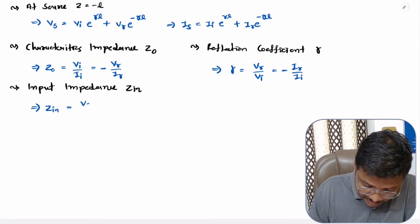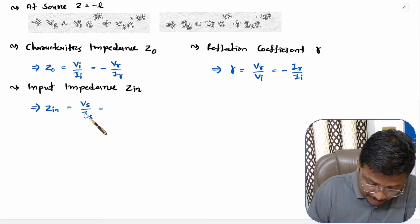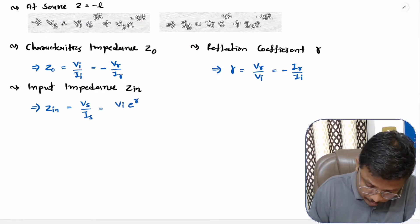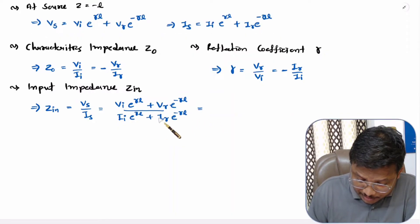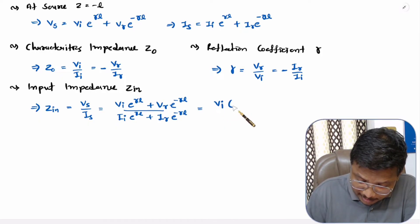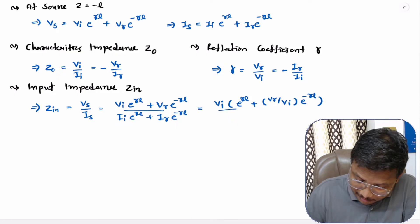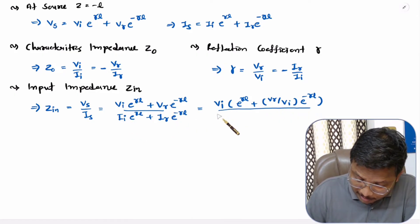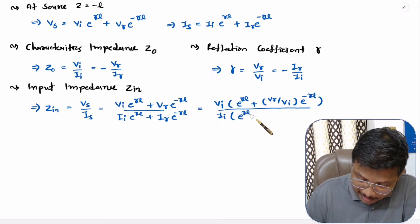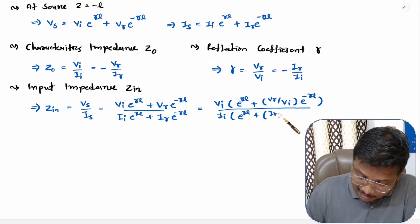So Zin equals VS divided by IS. Now we place VS and IS. For further simplification, I take VI common from the numerator, giving a bracket of e^(γL) plus (VR/VI)·e^(−γL). In the denominator, I take II common, giving a bracket of e^(γL) plus (IR/II)·e^(−γL).